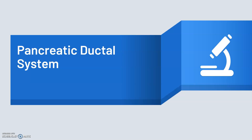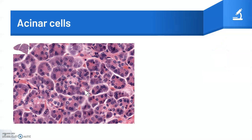The pancreas also contains a ductal system, which is mainly surrounded by acinar cells. The acinar cells' secretions are collected in the acinar lumen and are transported to the duodenum through a series of progressively enlarging pancreatic ducts.